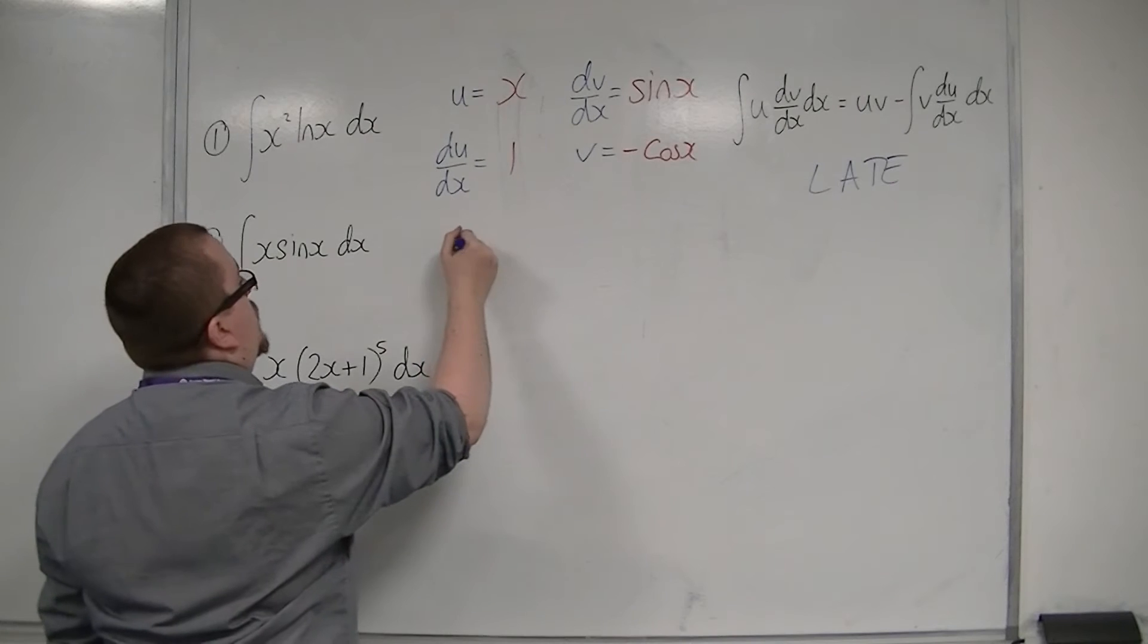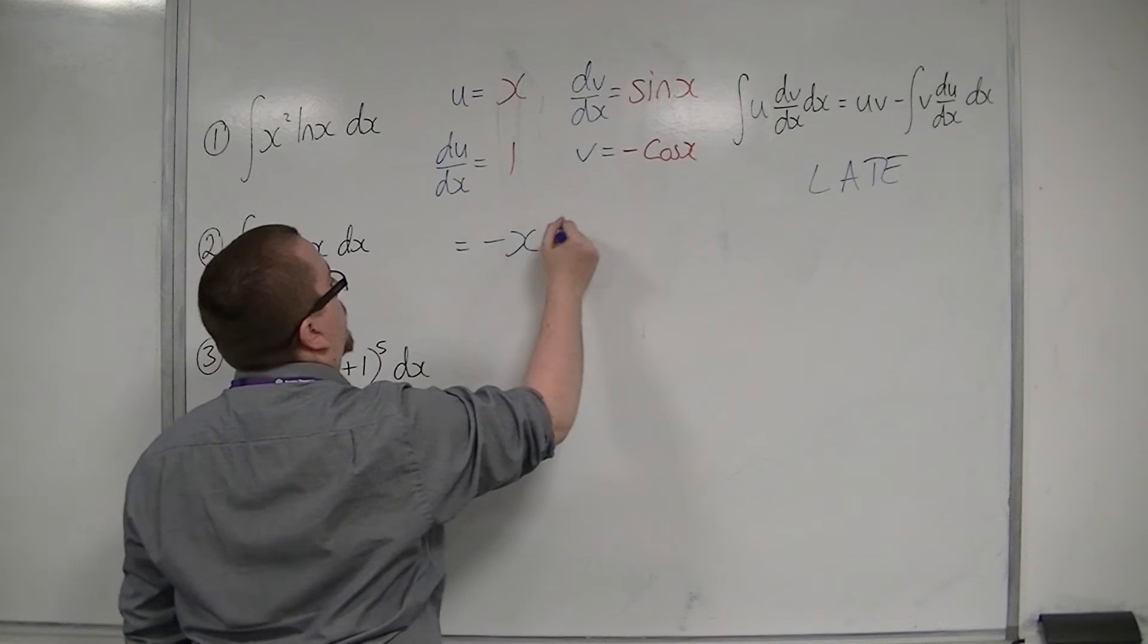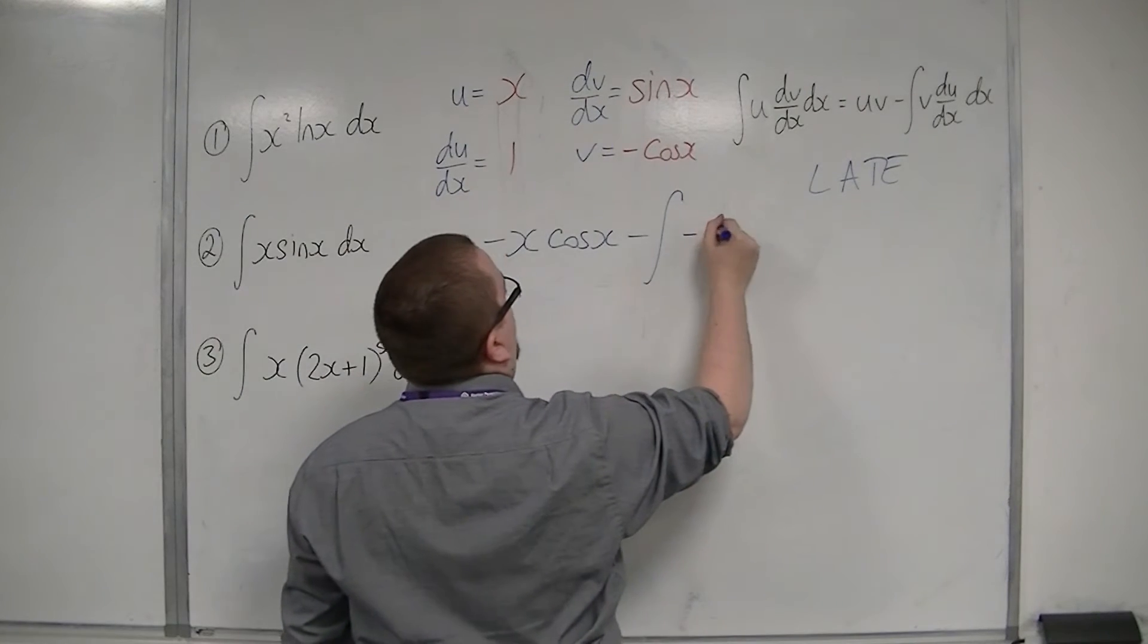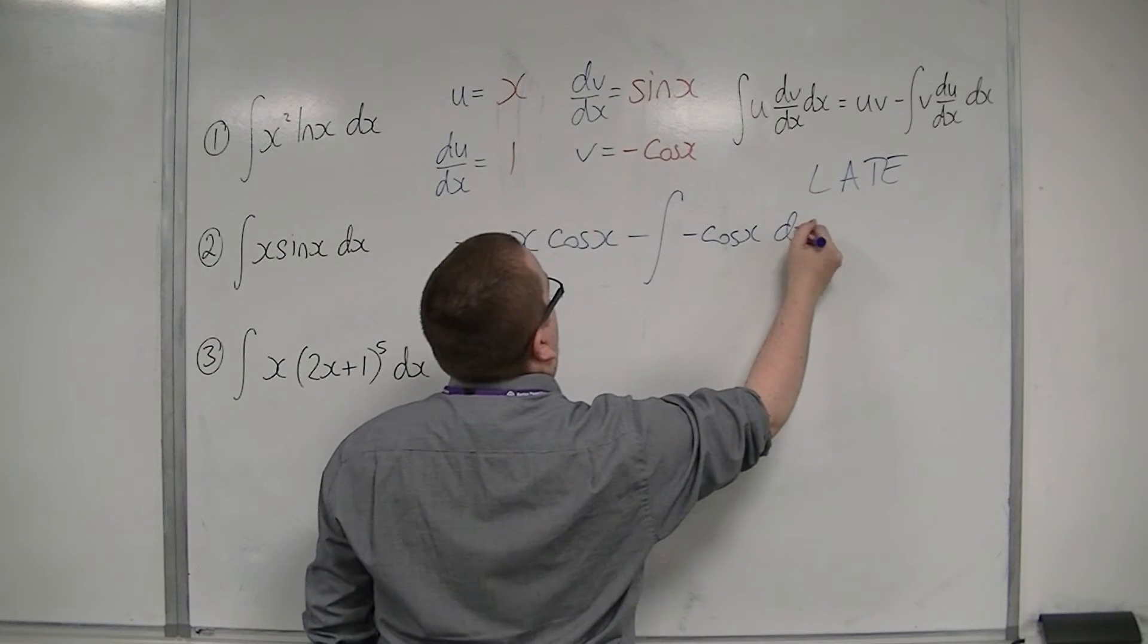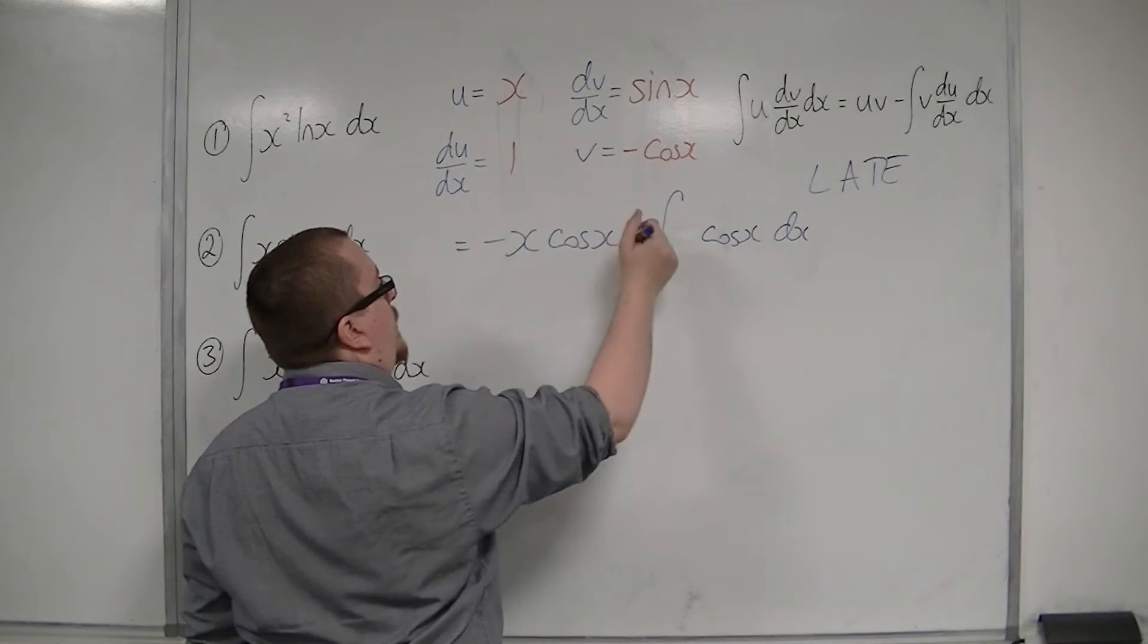So the integral is u times v, so x times minus cos x. Take away the integral of v du by dx. So minus cos x dx. Now I've got a minus there and a minus there, so that can become a plus.